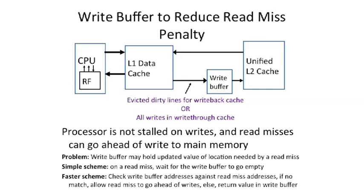Here we have our CPU and L1 data cache. Our next level here is an L2 cache or maybe main memory. There's something in this cache at a particular line, and it's dirty in the cache — the dirty bit is set. It has a state we cannot throw out.